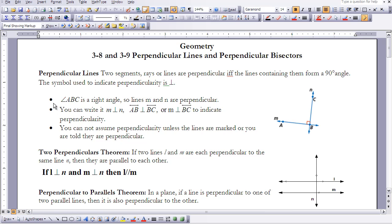Angle ABC is a right angle here, so then we know that lines M and N would be perpendicular to each other. We can write that in a few different ways: M is perpendicular to N, or line AB is perpendicular to line BC, or line M is perpendicular to CB, or line N is perpendicular to AB, all of which would be perfect ways to indicate perpendicularity.